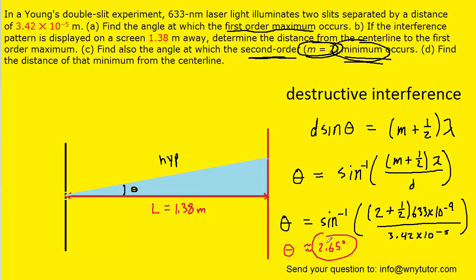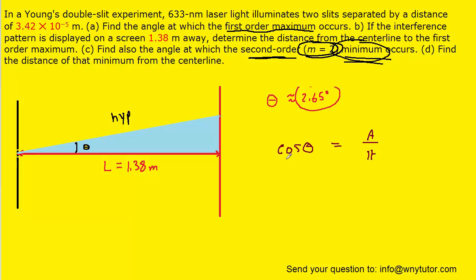Part D is very similar. We can use the same picture from part B. The only difference is the angle is now 2.65 degrees, but we're still calculating the distance from the centerline to the second order minimum, so we're still looking for the hypotenuse. We use the cosine function: cosine of the angle equals adjacent over hypotenuse. We invert both sides and multiply by adjacent. We plug in 1.38 meters and divide by the cosine of our angle. We should get approximately 1.38148 meters for the correct value to part D.